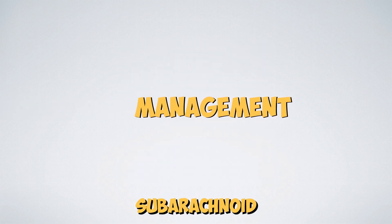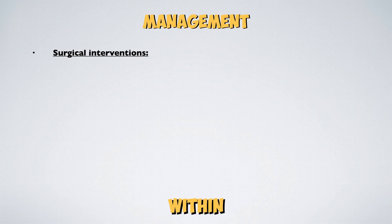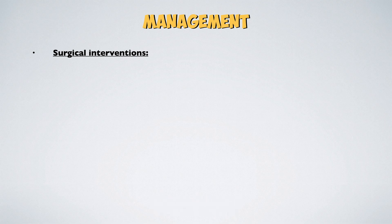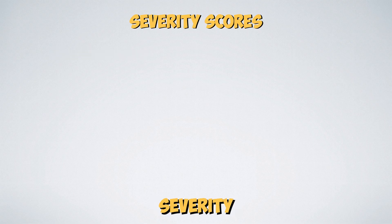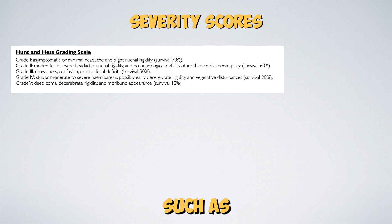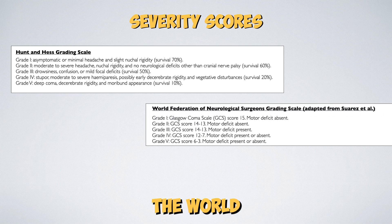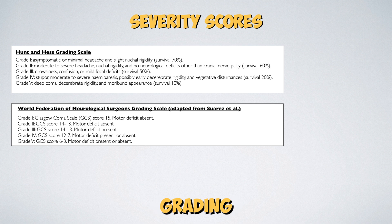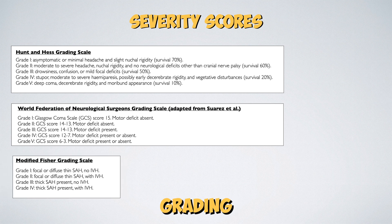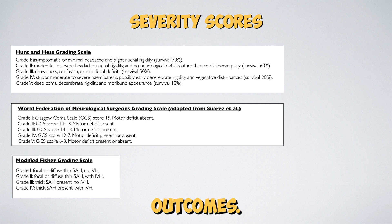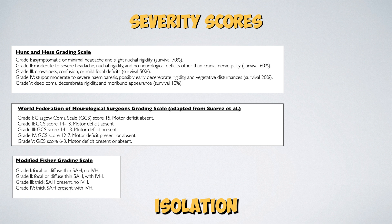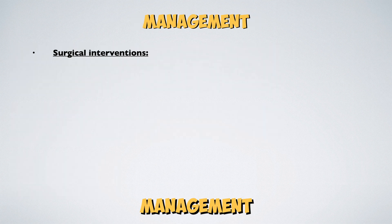All cases of subarachnoid haemorrhage should be discussed with neurosurgical teams, as early intervention within 48 hours reduces the risk of re-bleeding and disability rates. There are various tools to determine severity, such as the Hunt and Hess grading scale, the World Federation of Neurological Surgeons grading scale, and the Modified Fisher grading scale. However, severity scores should not be used in isolation to determine the suitability of any management option.